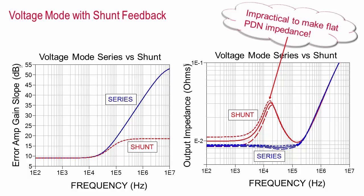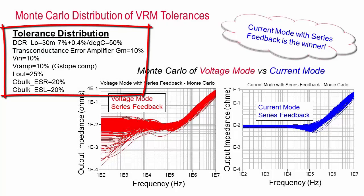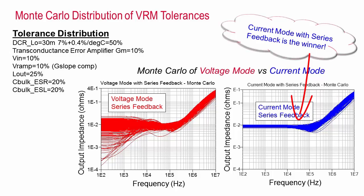After carefully tuning voltage mode and current mode VRMs to achieve similar flat impedance profiles, realistic tolerances are added to the simulation. Despite similar nominal impedance profiles, current mode control with series terminated feedback is much less sensitive to component tolerances. It wasn't possible to create a flat impedance using voltage mode control and shunt feedback, so we didn't simulate the shunt feedback for current mode either.